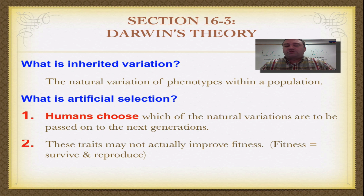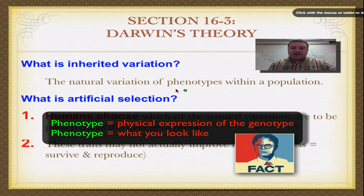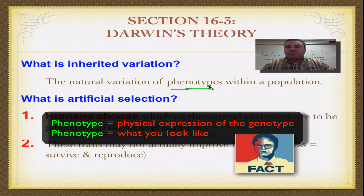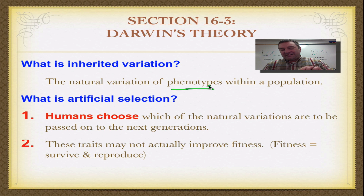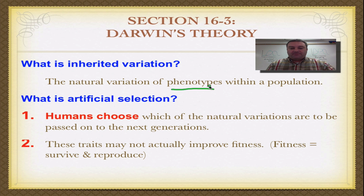Darwin's theory starts with what is called inherited variation — there is a range of phenotypes within a population. If you look around in your own classroom, you'll see everybody looks different: some are tall, some are short, some have brown hair, some have red hair, some have blue eyes, some have green eyes. There's tremendous variation within any population. Nature will then begin to select which of those variations are going to be the most fit.